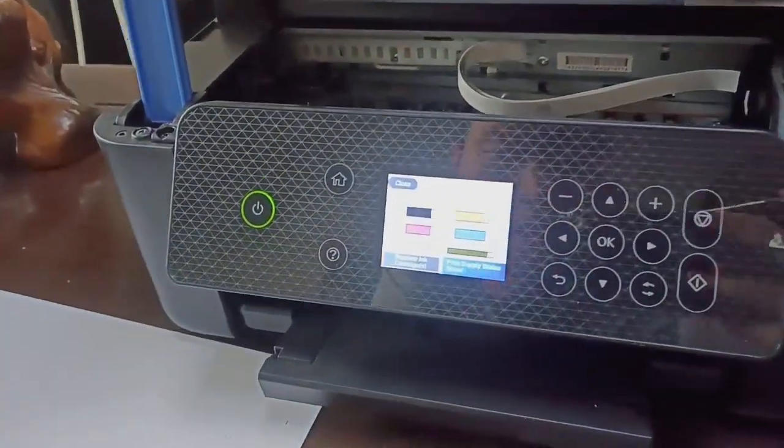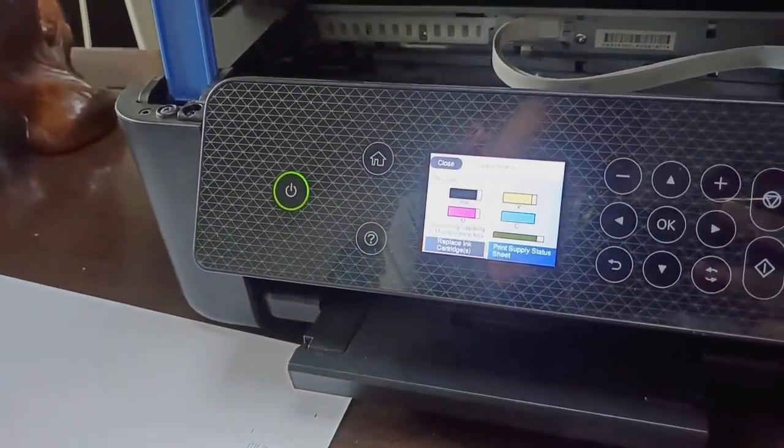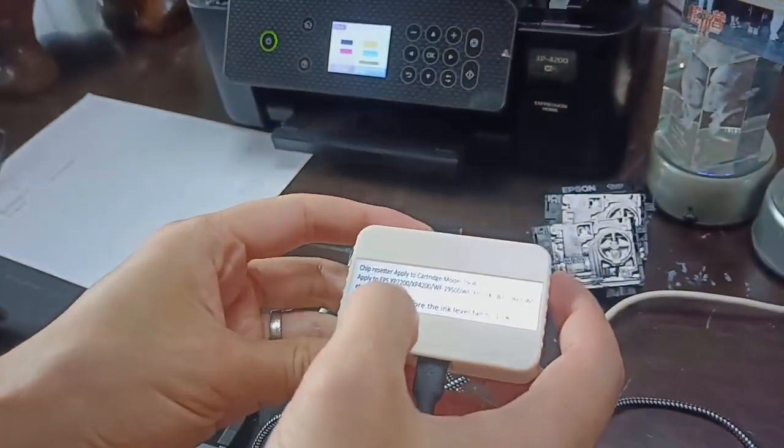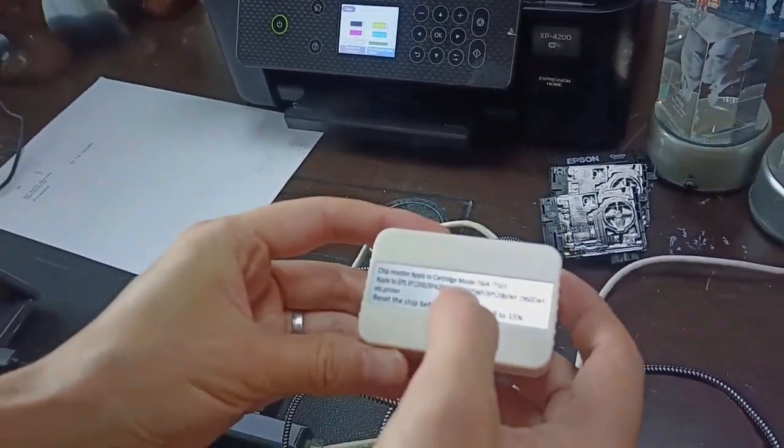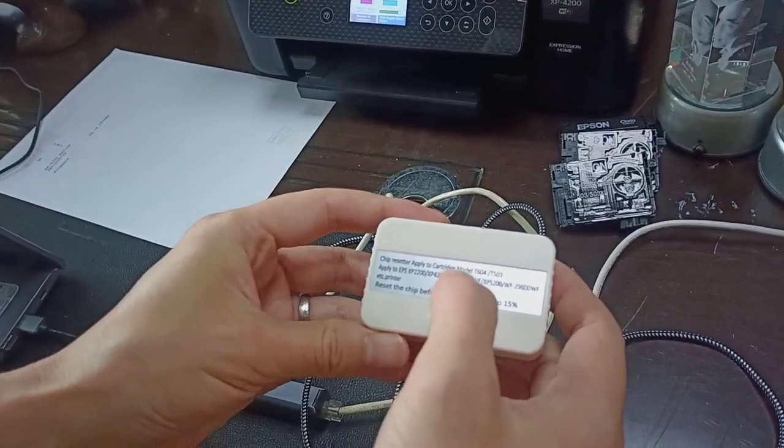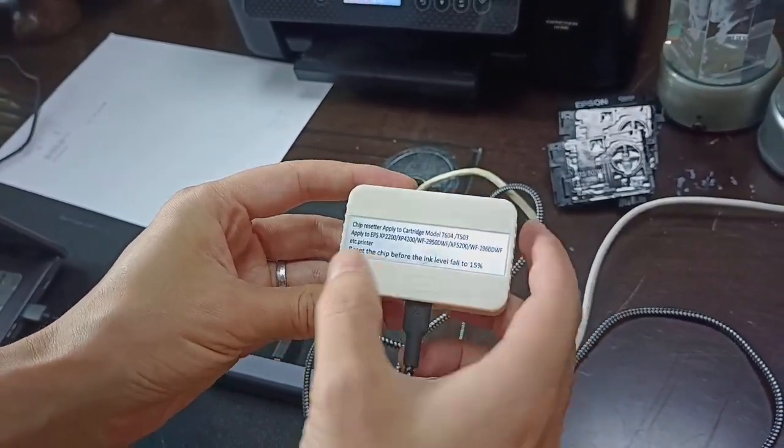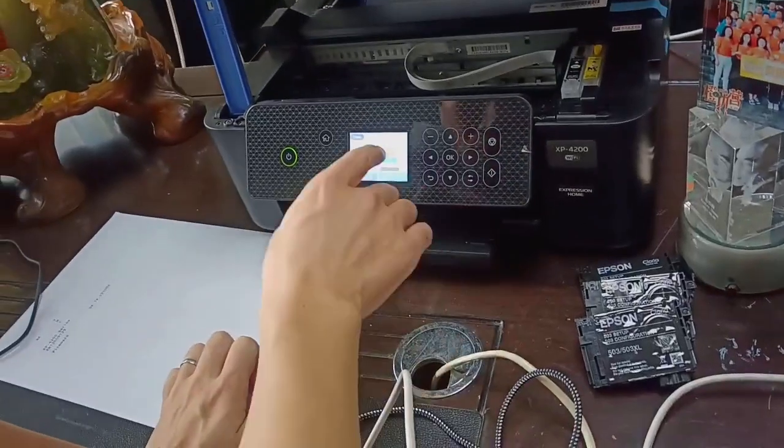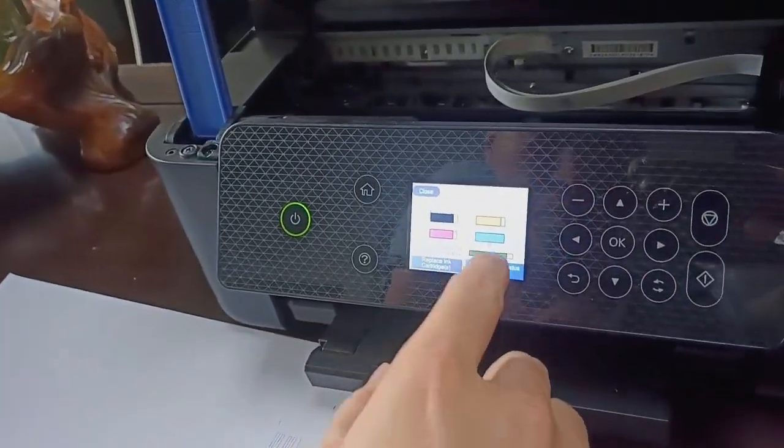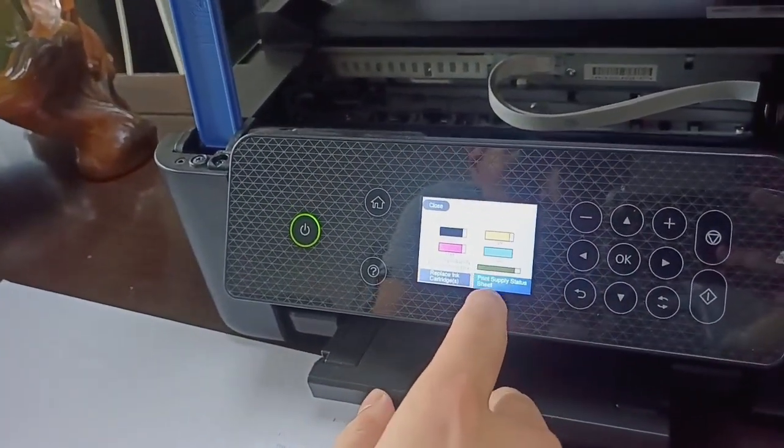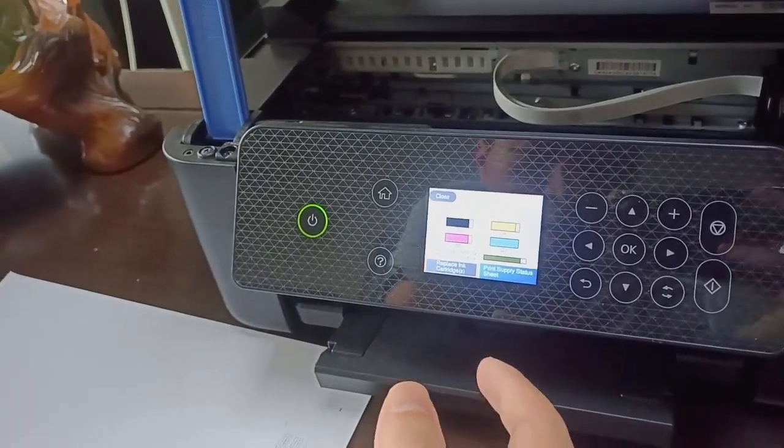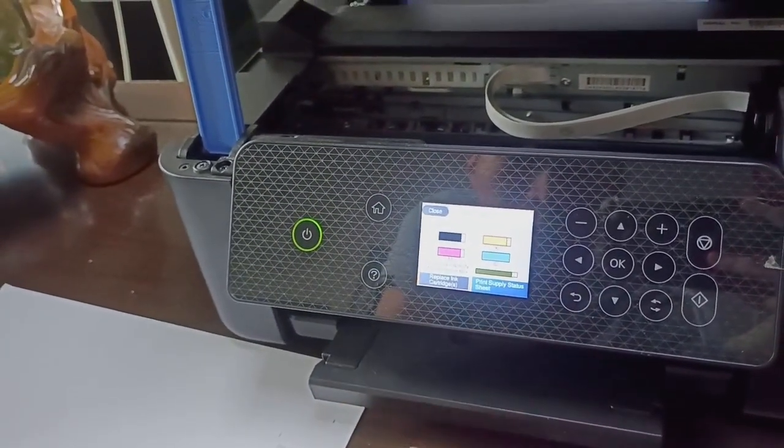Okay, I want to show this chip reset for Epson cartridge 604 or 503. This chip reset, if you reset a new chip, means the ink level is full. The chip reset LED doesn't turn green. Let me show.